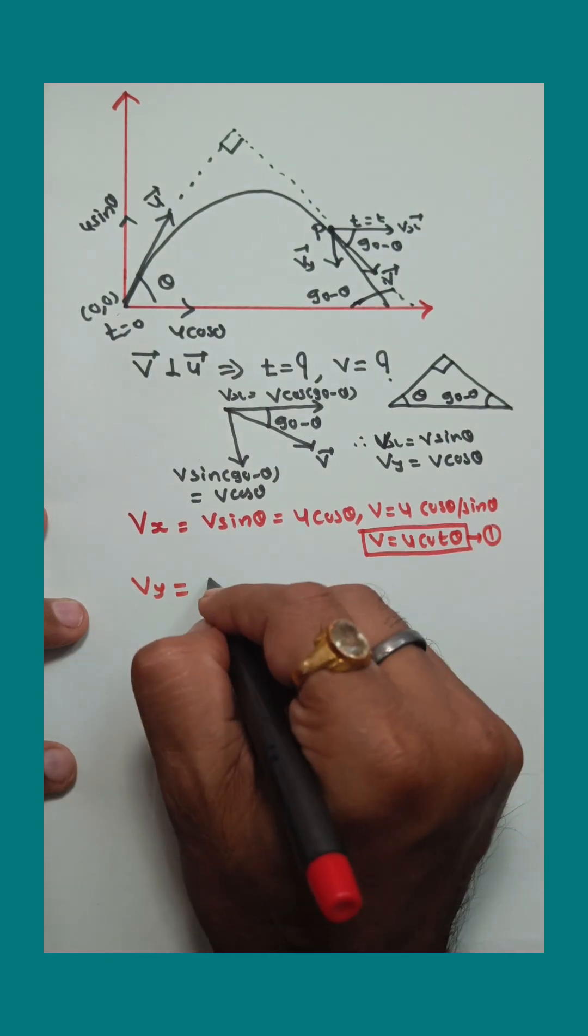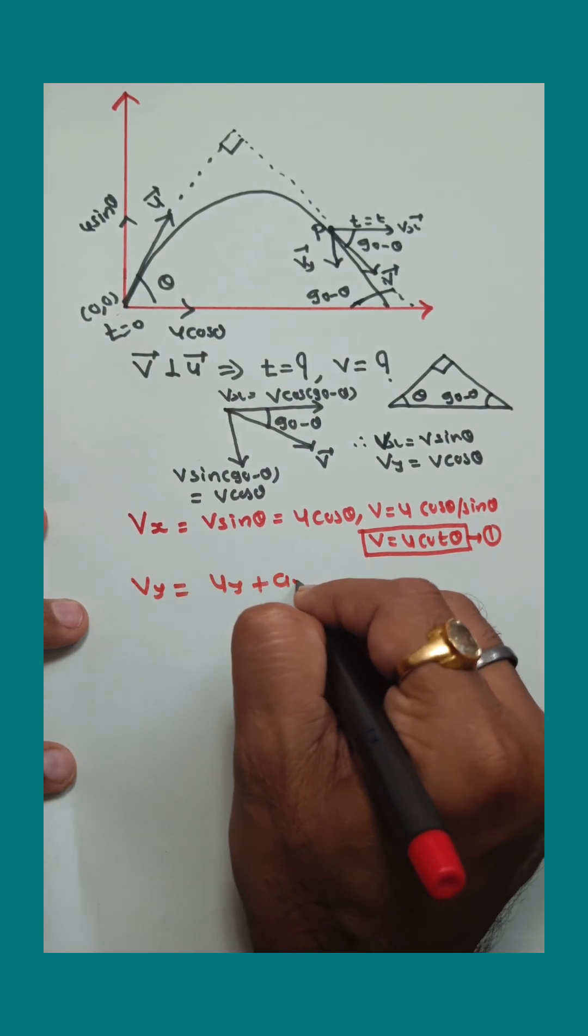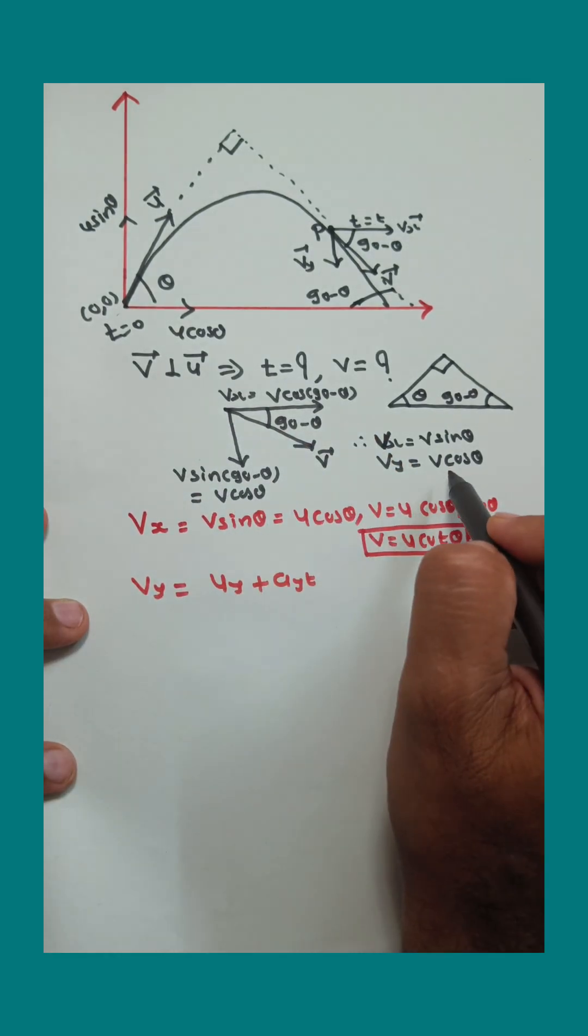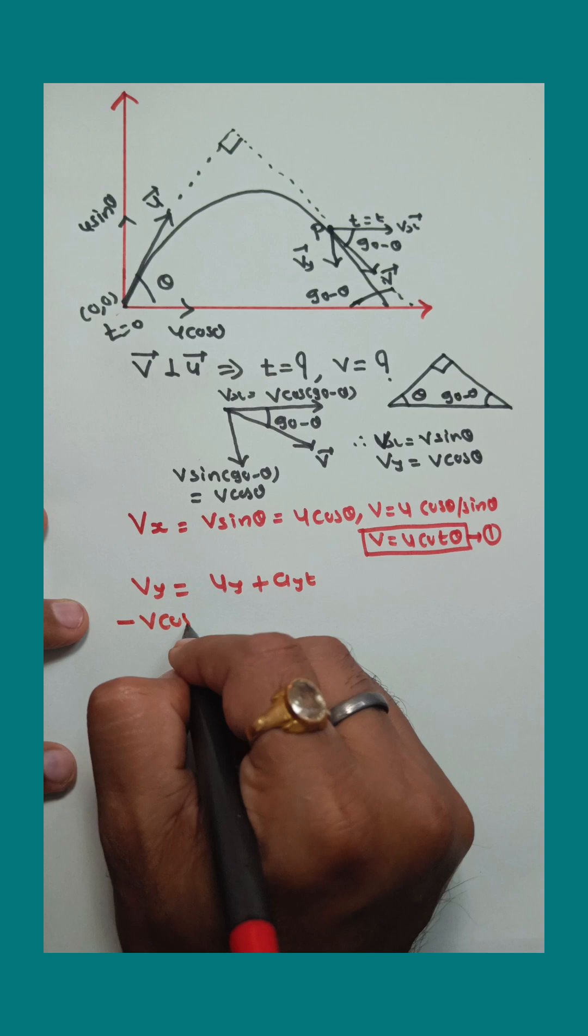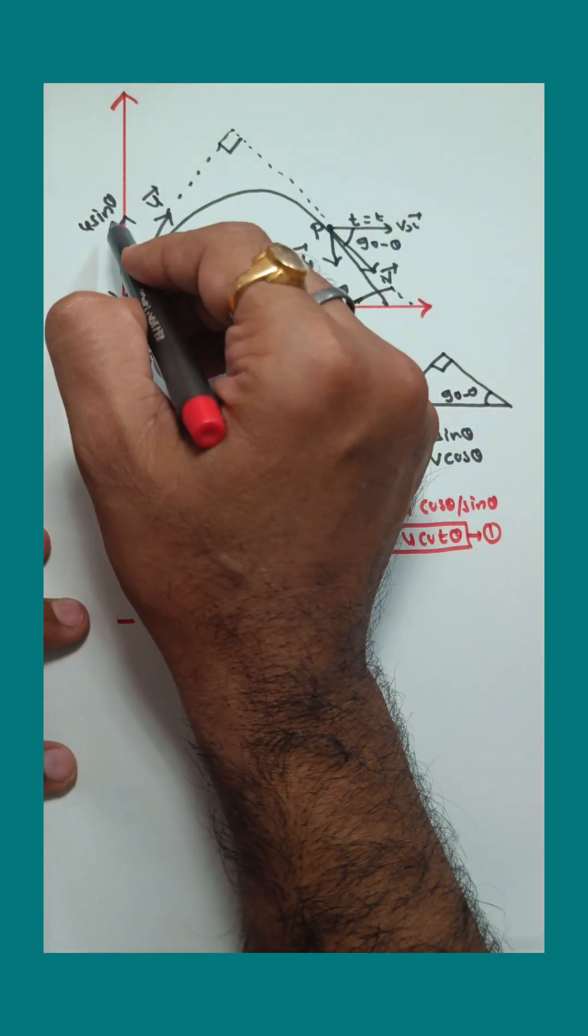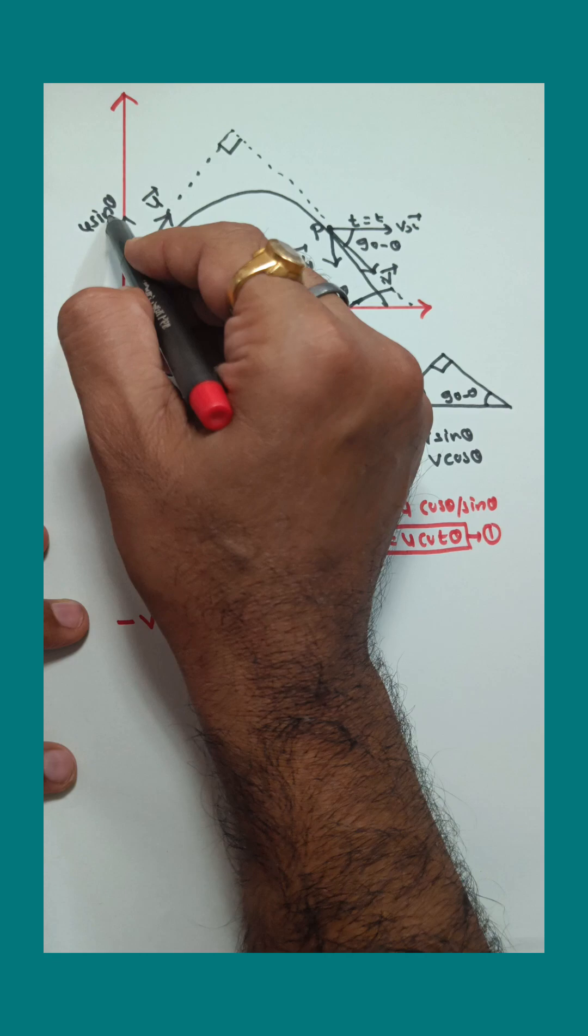Now vy equals uy plus ay times t. Here the y component of velocity is in the downward direction, so v cos theta can be written as negative, so minus v cos theta. Now uy, the y component of initial velocity, that is u sin theta.